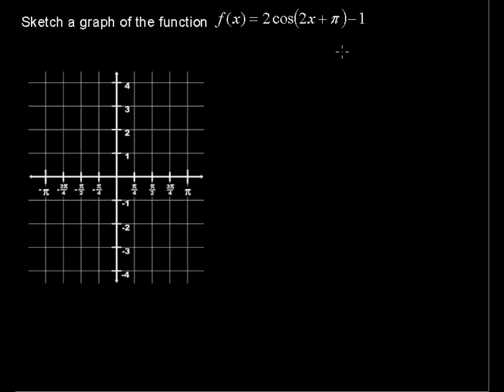Sketch a graph of the function f(x) = 2cos(2x + π) - 1. First, let's look at the basic function g(x) = cos(x), and then we'll be doing some transformations on this function.